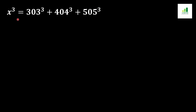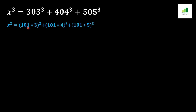In order to solve this question, first we should factorize these three values. 303 can be written as 101×3 to the power cube, 404 can be written as 101×4 to the power cube, and 505 can be written as 101×5 to the power cube.